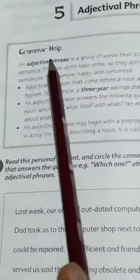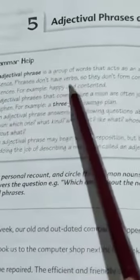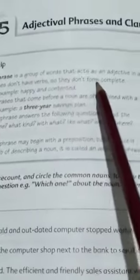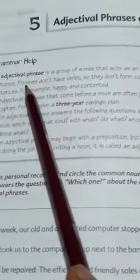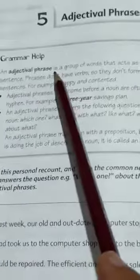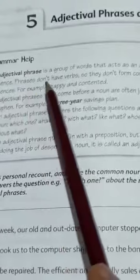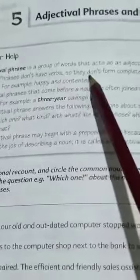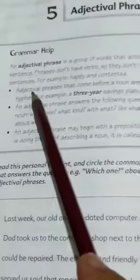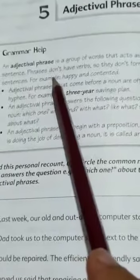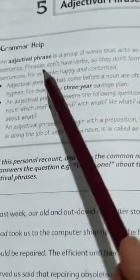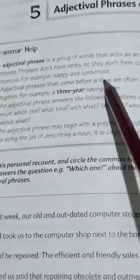So students, adjectival phrase ki definition kya hai? Adjectival phrase ek aisa group of words hai jo ki act karta hai kis tarah? Ek adjective ki tarah. So, it is called adjectival phrase aur yeh ek noun ko describe kar raha hota hai. Lekin phrases jo hain us mein verb nahi hota. So, they don't form a complete sentence. Means ke phrases jo hain woh complete sentences nahi hote. Like example kya hai jaise happy and contented.